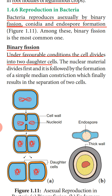Under favorable conditions, the cell divides into two daughter cells. In diagram 1.11a, you can see one mature bacterial cell. First, the nuclear material — the genetic material DNA — divides and produces a replica of itself. After division of the nuclear material, constriction occurs in the cell wall, where both edges of the cell come and meet in the center, forming a wall between the two cells.